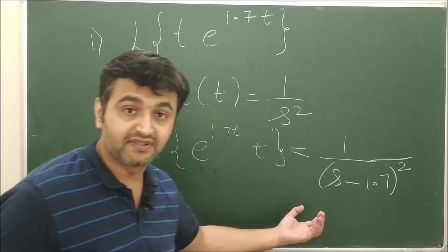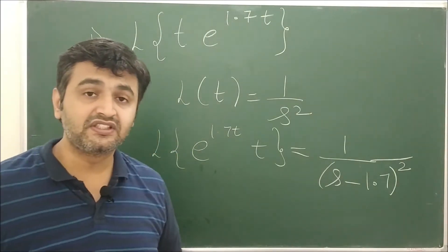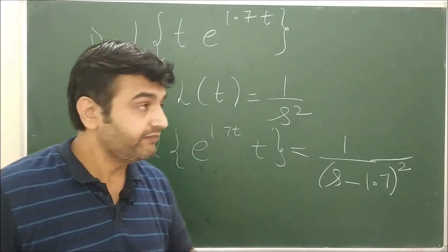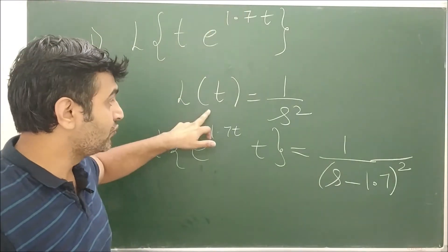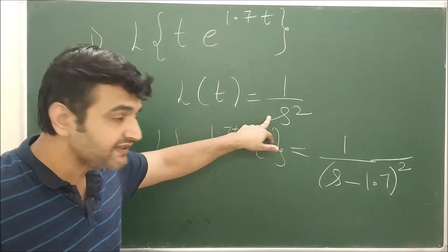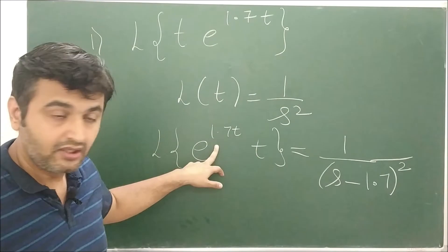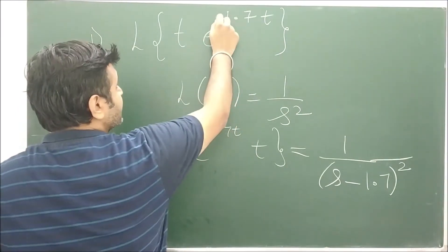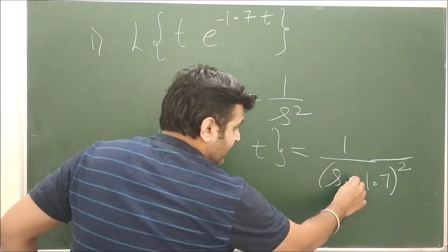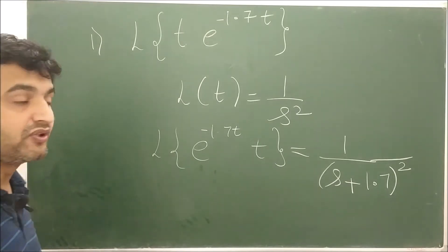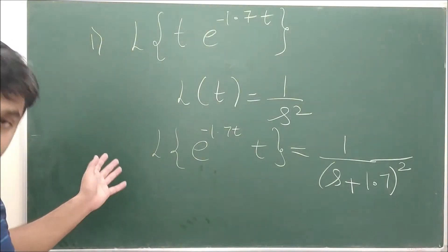See how easy it becomes. Whenever you see an exponential, just think of the first shifting theorem. Remove the exponential, see what is left, find its Laplace, and then simply shift your s by a units. If there is a minus sign in the exponent, this will become 1/(s + 1.7)².